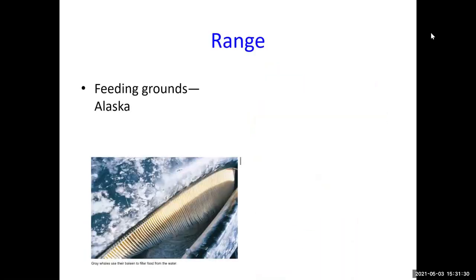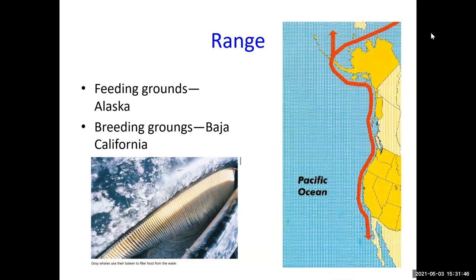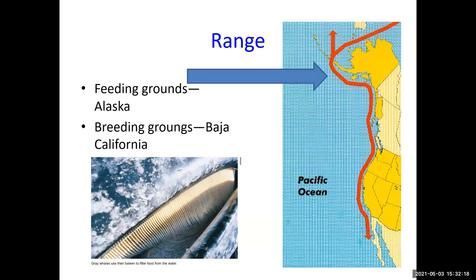Gray whales live part of the year in their feeding grounds off the coast of Alaska, then swim down to their breeding grounds in Baja California — a long swim. The best time to see them off the central California coast is around the end of January and into February, when some whales are still heading south and others are already swimming back north. You can take a day trip on a sightseeing boat and often see the migrating whales.